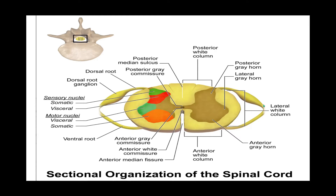We have the spinal nerve roots — ventral roots and dorsal roots. The anterior gray horn carries somatic and visceral motor nuclei, whereas the posterior gray horn usually contains somatic and visceral sensory nuclei.